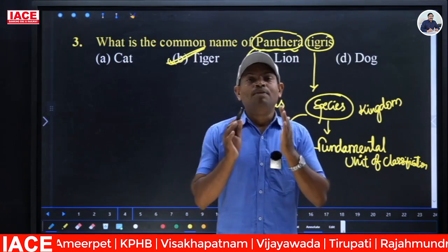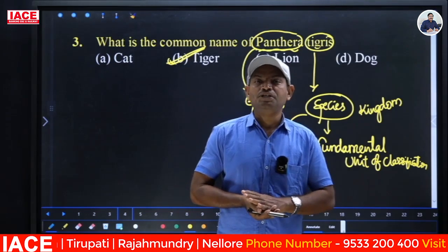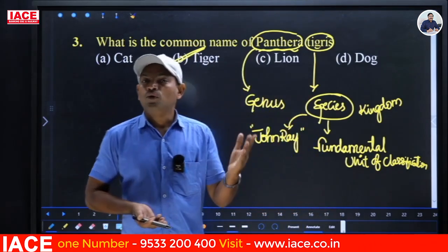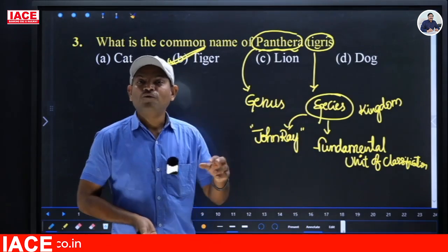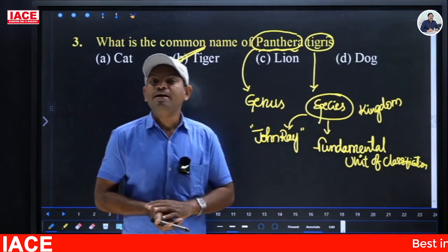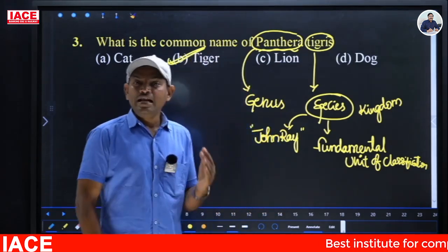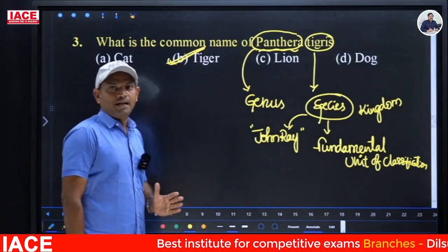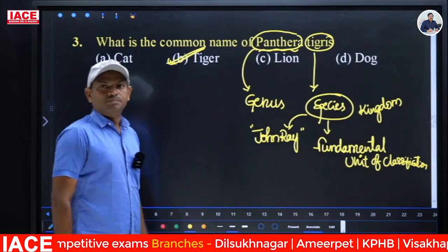All mosquitoes are one species, pigs are one species, humans are one species, rose plants and mango plants are each one species. A group of organisms with similar characters that can interbreed freely is called a species, and it is the fundamental unit of classification.